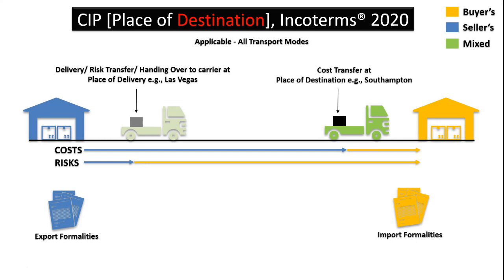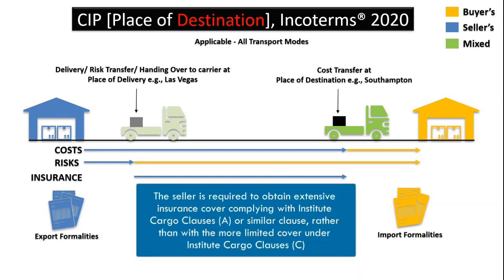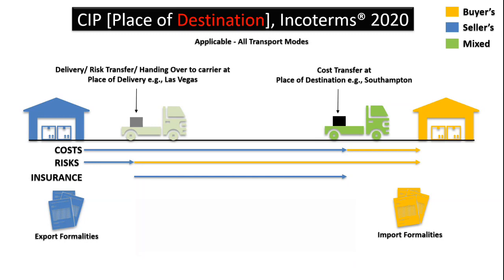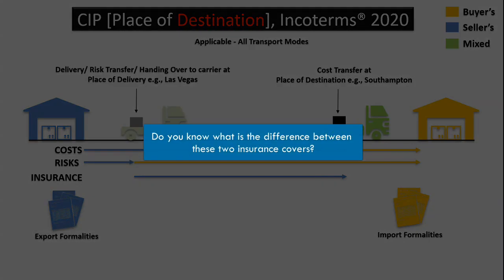CIP also indicates the place of destination and not the place of delivery. This incoterm is similar to CPT with one major addition: the seller is liable to buy insurance to cover the buyer's risk at least till the place of destination. In Incoterms 2020, the seller is required to obtain extensive insurance cover complying with Institute Cargo Clauses A or similar, rather than the more limited cover under Institute Cargo Clauses C. Though this is stated as a standard, the level of insurance is still negotiable between the buyer and the seller.